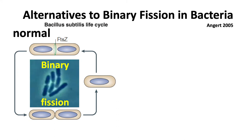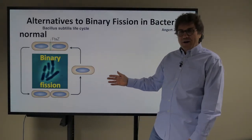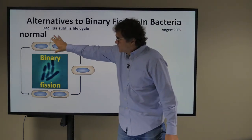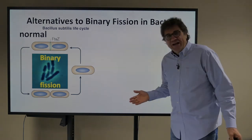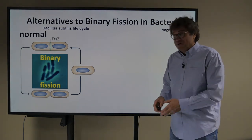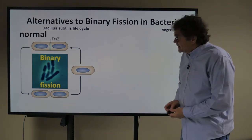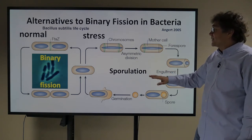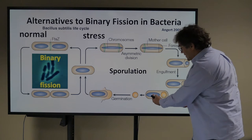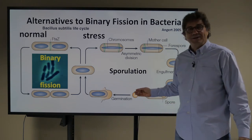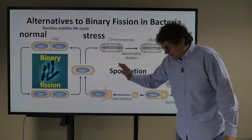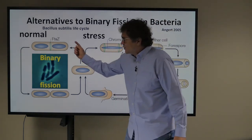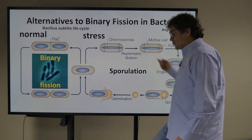There are alternatives to binary fission in bacteria. A single cell goes through normal binary fission under good conditions — it gets longer, produces offspring, and the cycle repeats. But if there's stress, like not enough water or too much salt, the cell sporulates instead. The mother cell produces two things: one normal cell and one spore. That spore is very hardy and sits dormant. When conditions improve, it germinates and returns to normal reproduction until stress triggers sporulation again.